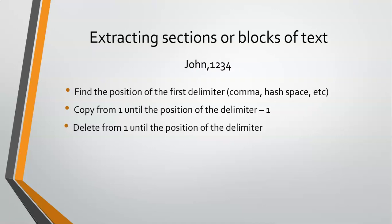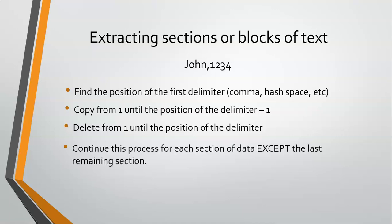The key part here is that we're going to continually do this whole process again. A lot of people forget that you need to also include finding the position of the delimiter again, because the comma will have a very different position value than in the previous iteration. So we need to find the position of this new comma at its new particular position, copy from one till that comma minus one, then delete the rest. You could have a string with lots of data separated by commas, so you continually do this process again and again — except for the last section, which does not have a delimiter.